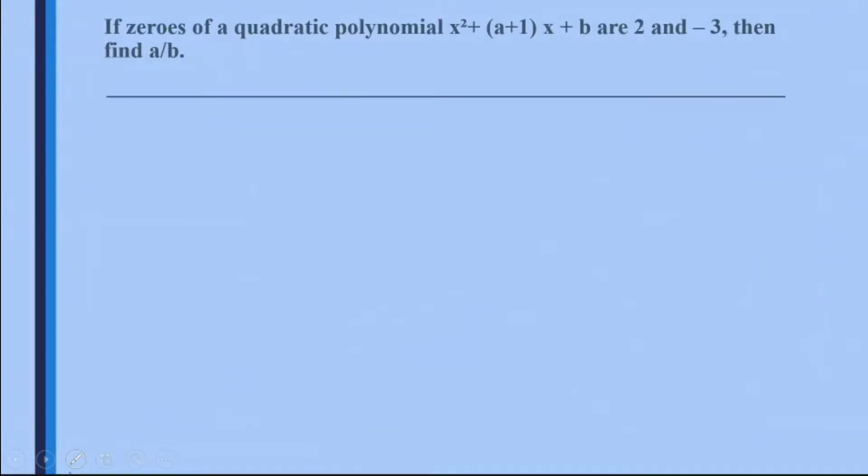So how do we do the question? Let us see the solution. We know that the sum of the zeros of the polynomial, if you remember, it is given by minus the coefficient of x upon coefficient of x².